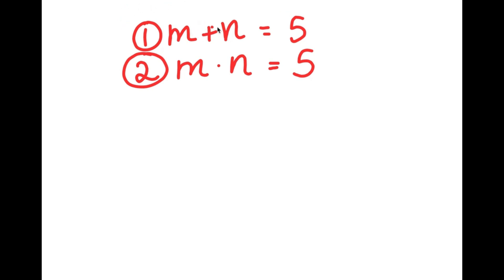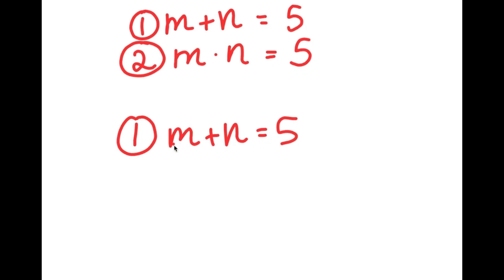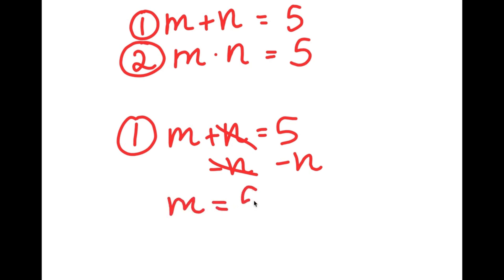My first equation is m plus n equals 5, and what I'm going to do is rewrite this to get the value of just one variable. I'm going to choose m. To get the value of m, I have to get rid of n by subtracting n on both sides. These two cancel out, and I get m is equal to 5 minus n.